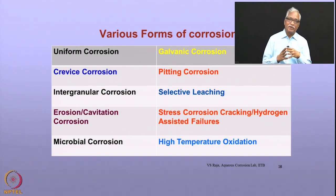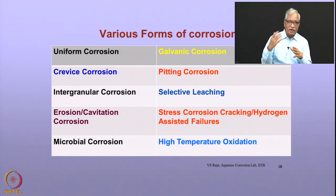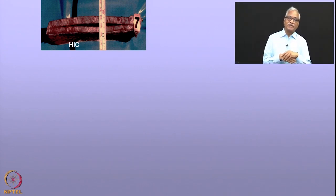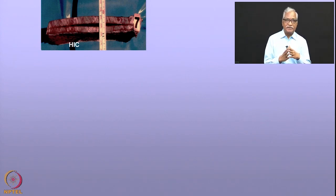For example, hydrogen assisted failures can include two or three sub-forms: hydrogen blistering, hydrogen embrittlement, and decarburization. There are sub-mechanisms by which these species interact to lead to corrosion. What I have shown here is hydrogen induced cracking occurring in a steel structure — on the surface corrosion occurs, hydrogen is liberated, a part of the hydrogen gets into the metal, accumulates, builds up pressure, and causes mechanical damage. What you see here is called hydrogen induced failure, which happened in one of the refineries.